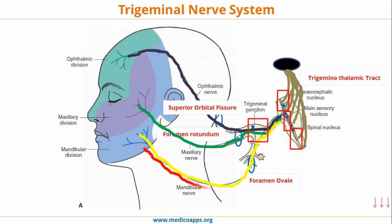The motor component is very simple — it has a mandibular nerve branch which enters via the foramen into the motor nucleus. You will also realize that the mandibular nerve is a mixed nerve, meaning it has both sensory and motor components, whereas the ophthalmic nerve and the maxillary nerve are purely sensory nerves.